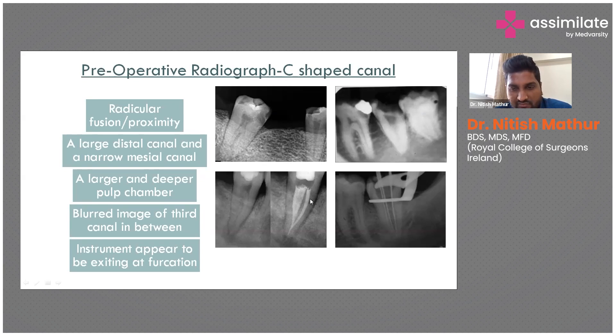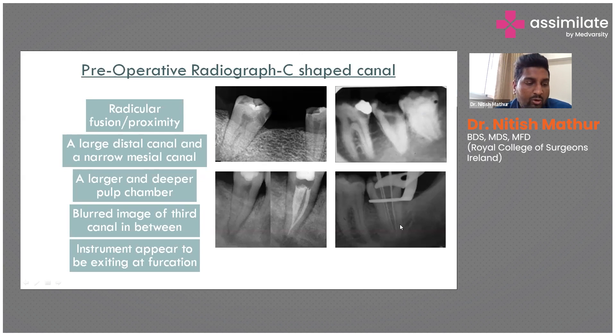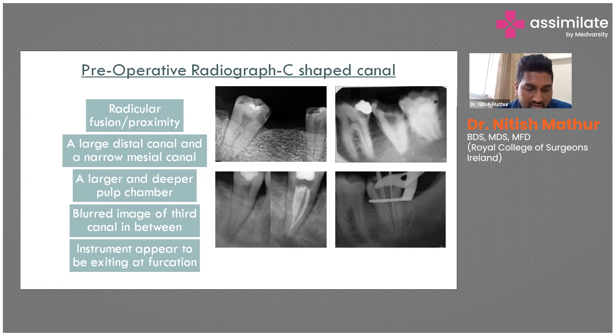Additionally, if an instrument is placed, it appears to be exiting at the furcation. All these features are suggestive of and help suspect a C-shaped canal.